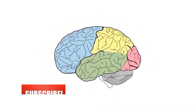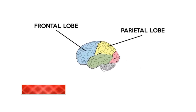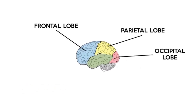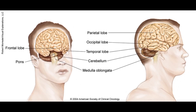Posterior to the central sulcus is the parietal lobe. This lobe is mainly concerned with sensory functions of the somatosensory category, such as touch, stretch, movement, temperature and pain.